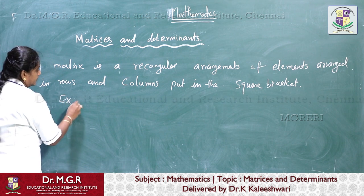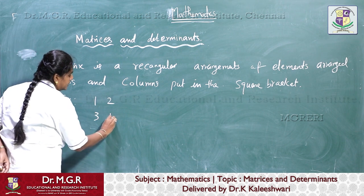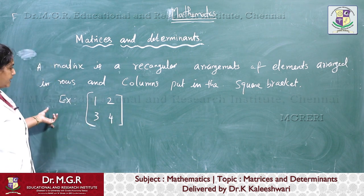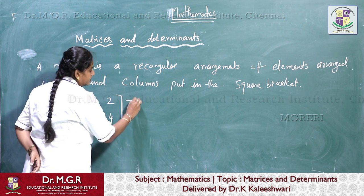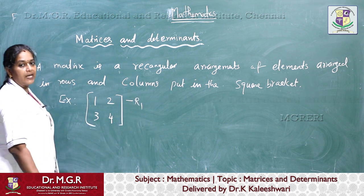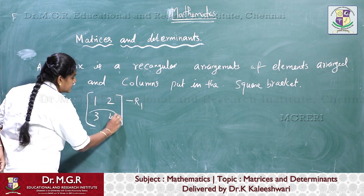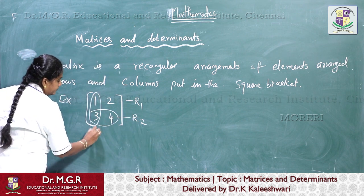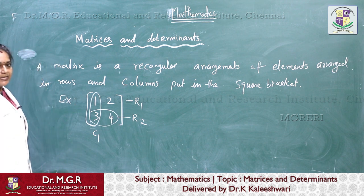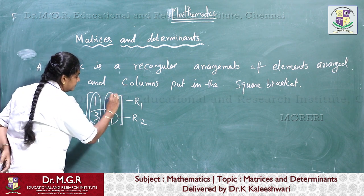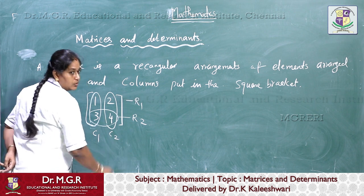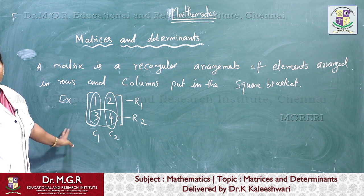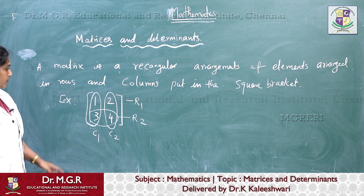1, 2, 3, 4 — so this is an example of a matrix. This is called the first row, denoted as R1, and this is called R2, the second row. This is denoted as C1, that is the first column, and this is another column C2. Therefore, the entries — elements arranged in rows and columns — form a matrix.